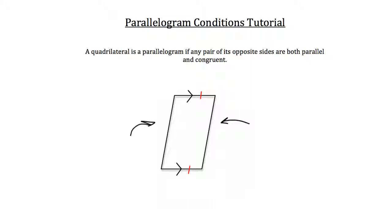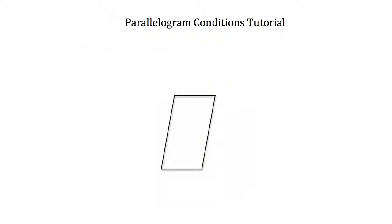Now that you've seen those five conditions, let's practice a little bit. I'm going to indicate some aspects of this quadrilateral and you tell me if it's a parallelogram or not. What if I told you that this angle was 80 degrees, these two angles were congruent to each other, and this angle was 100 degrees? Would this quadrilateral be a parallelogram?